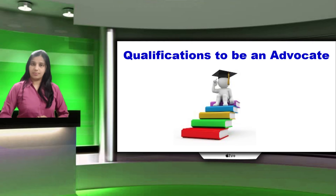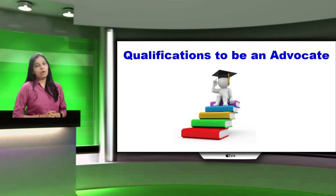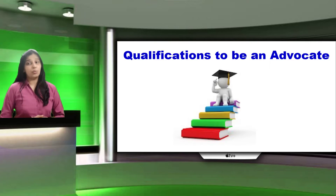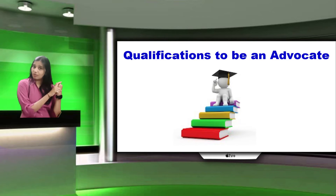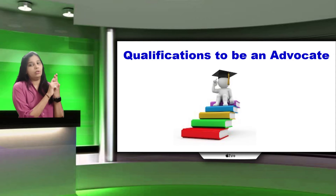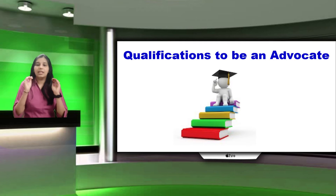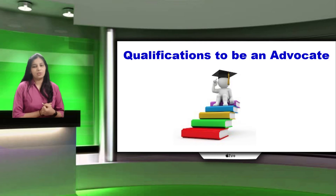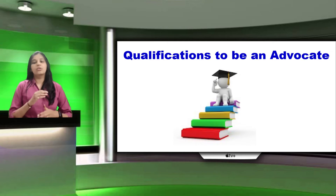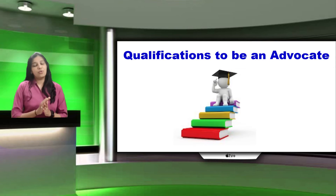This is the video on qualifications to be an advocate. In order to be eligible for enrollment according to Section 24 of the Advocates Act, an advocate must be a citizen of India, at least 21 years of age, must have an LLB degree from an Indian university, and must have paid the enrollment stamp duty and enrollment fee payable at the state bar council. A foreign national may be enrolled on a reciprocal basis with the country of his citizenship, and his foreign degree may be recognized by the council for this purpose.